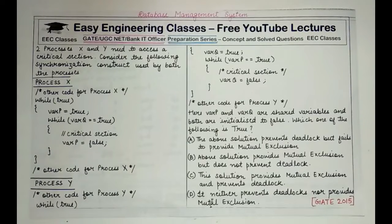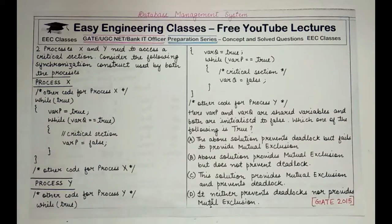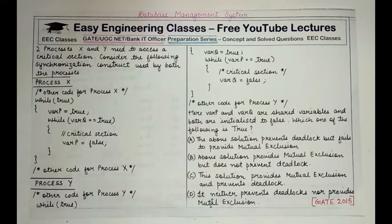An important reminder: a deadlock can only happen if mutual exclusion and other conditions such as no preemption and circular wait are present. Therefore, if mutual exclusion is not being followed in this solution, a deadlock cannot occur either.